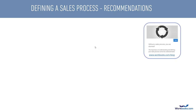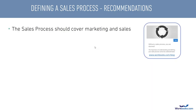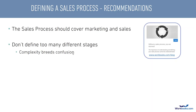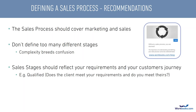Some recommendations: your sales process should cover both marketing and sales so everyone involved in generating and closing new business understands the terminology and processes. Generally, keep it relatively straightforward — it's best not to micromanage this process. Simple and clearly defined stages help people understand where they are in the sales cycle. Complexity can breed confusion, particularly if you don't have a defined process today.